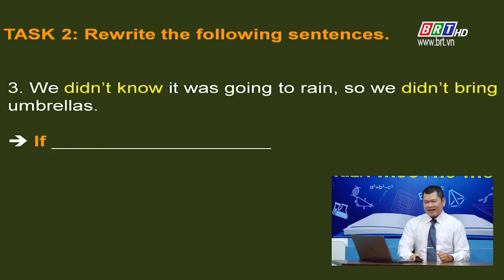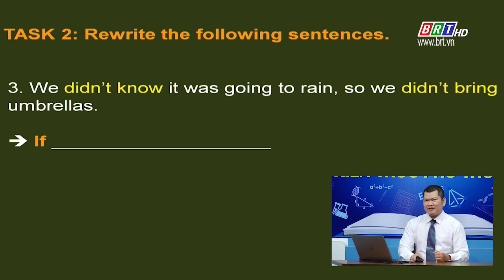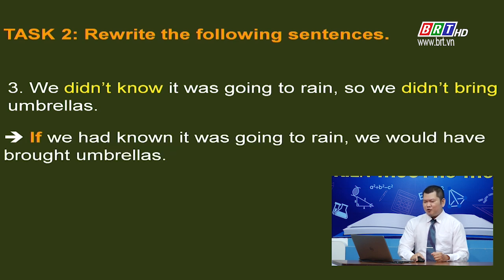Sentence 3: 'We didn't know it was going to rain. So we didn't bring umbrellas.' The verbs 'didn't know' and 'didn't bring' are in the past tense, indicating a past situation — Type 3 conditional. If we had known it was going to rain, we would have brought umbrellas. Remember to check: 'had known' in the if-clause, and 'would have brought' in the main clause.